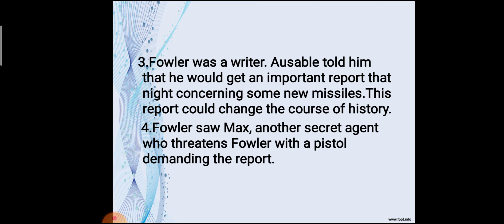Fowler was a writer. Ausable told him that he would receive an important report that night concerning some new missiles. This report would change the course of history. Fowler then saw Max, another secret agent, who threatened Fowler with a pistol, demanding the report.